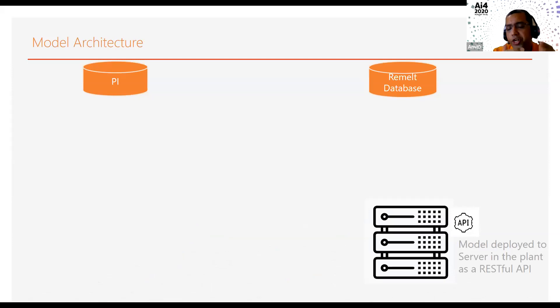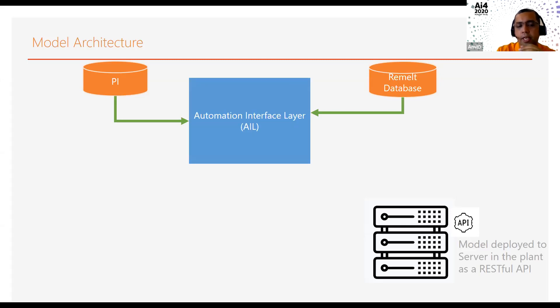We deployed this model as a REST API in our plant server. Originally, we wanted to deploy this model in our cloud resources. But once we realized that the plant where we are going to use it had bandwidth issues, we decided to keep the model close to the source where the decision was going to be made. This is where the industry is changing. Historically, cloud computing was the norm, and now it's moving towards edge computing. We get the data from those two data sources I mentioned earlier. It comes to a single database, we call it automation interface layer,